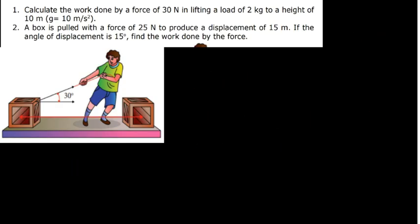Question 2 is saying: a box is pushed with a force of 25 Newton to produce a displacement of 15 meters. If the angle of the displacement is 15 degrees, find the work done by the force. Now, if you check here, there is an error — they show an angle of 30 in the diagram, but they are saying the angle is 15. So we have to use 15 degrees.